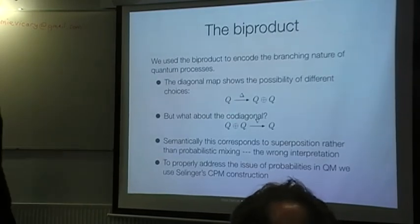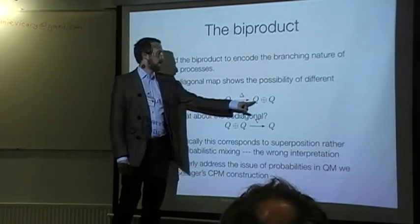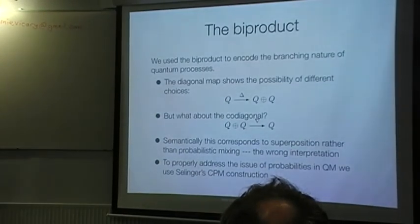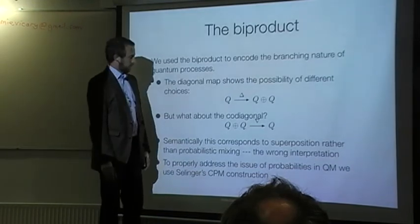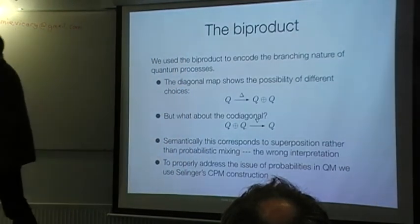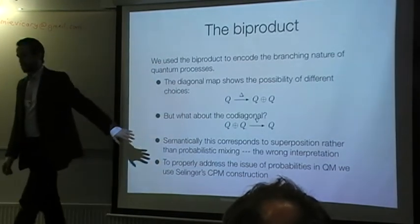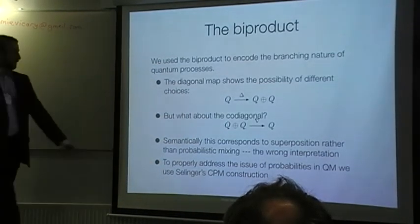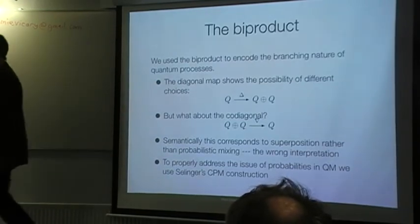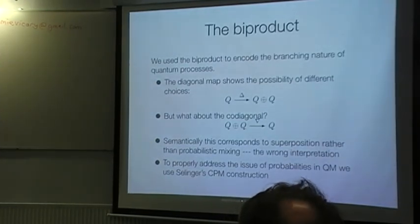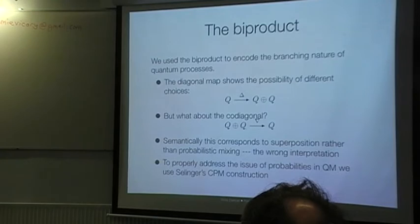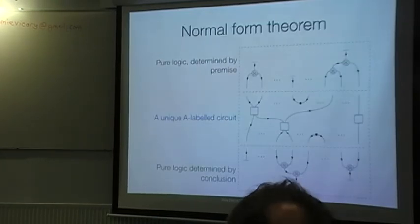Let's think about whether this actually works or not. So, we have this diagonal map. It says, I'm going to make a choice. This is representing measurement. But we have daggers, so we also have the co-diagonal. So, we think this should correspond to forgetting which choice you have. But if you interpret this thing in the category of Hilbert spaces, that's not what it is. What you usually get is just simply addition. So instead of forgetting your choice and having this probabilistic mixing, you get the coherent superposition of the two choices, rather than probabilistic mixing. So, this doesn't work. So, for probabilities, we should really go and use Peter Selinger's CPM construction, which I'm not going to talk about.